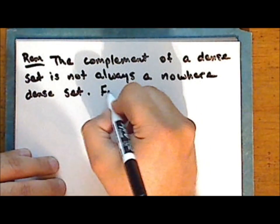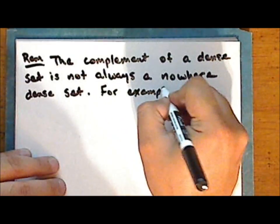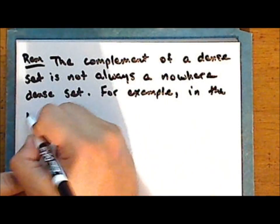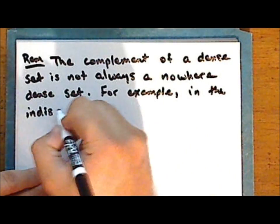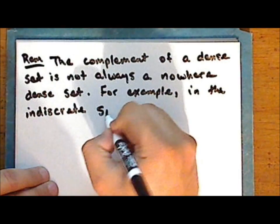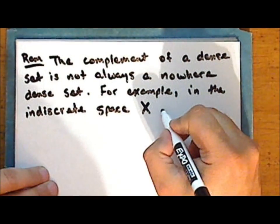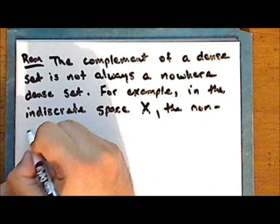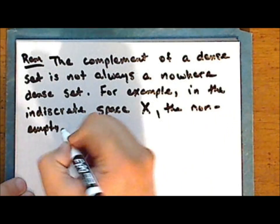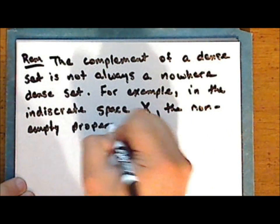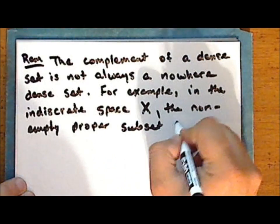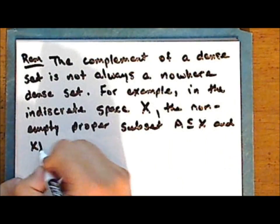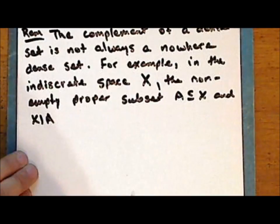For example, in the indiscrete space, the non-empty proper subset A and its complement are both dense in this space.